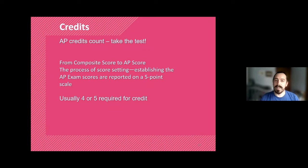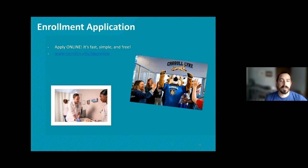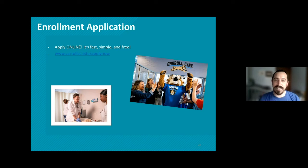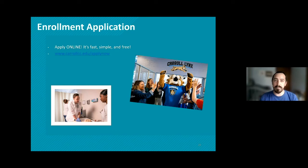Now that you've decided you're going to Carroll — you're going to be a Lynx — go to www.carolcc.edu/applynow. Our application is super simple, only takes about 10 minutes. We don't make you write essays. You just fill out the enrollment application, which creates your Carroll student account and gives you your carolcc.edu student email, which you can also use for discounts at different places. Once you've done that, you go on to placement testing. Kim Bachman is going to talk to you about placement testing and direct placement.